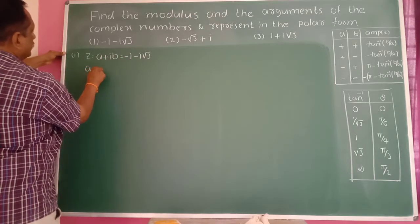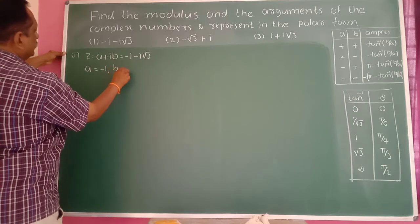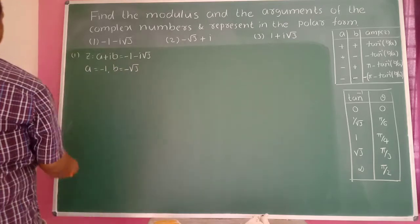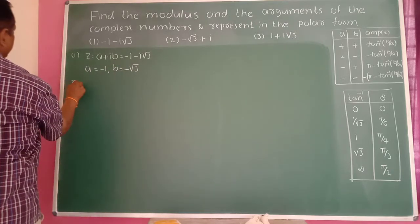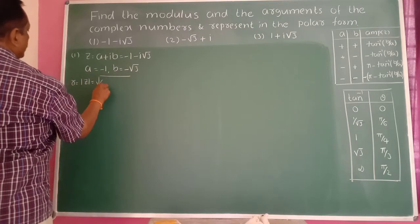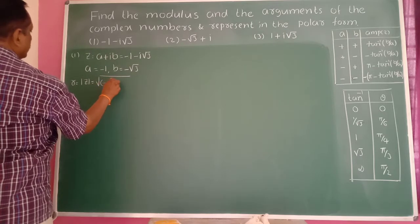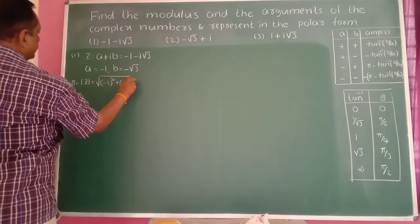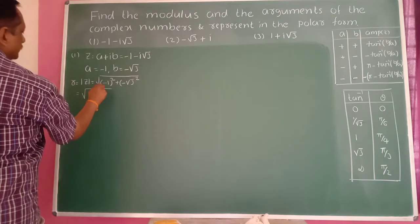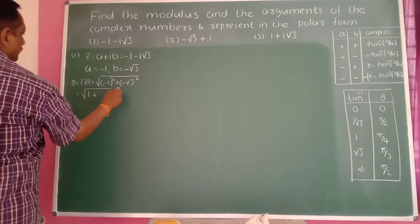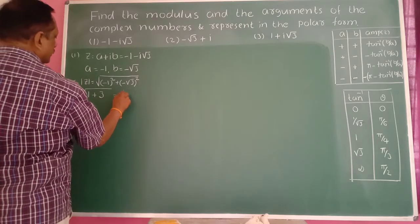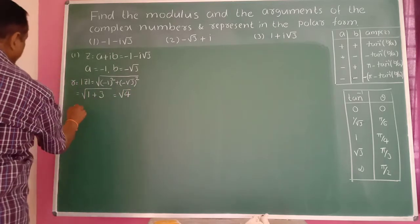So a is equal to minus 1 and b is equal to minus √3. For the modulus, r is equal to modulus of z is equal to root of (minus 1)² plus (minus √3)². Therefore this is equal to root of 1 plus 3, which is root of 4, and the square root of 4 is 2. So the modulus of the complex number is 2.